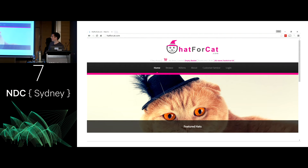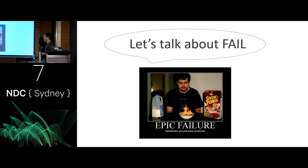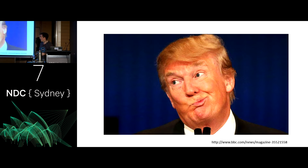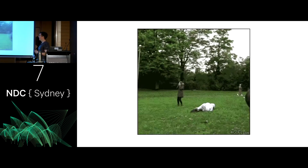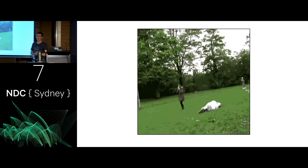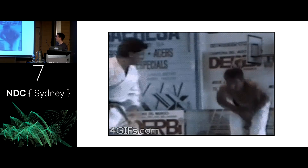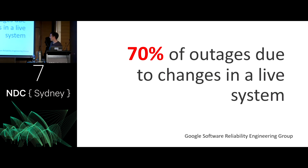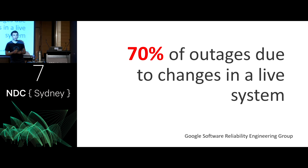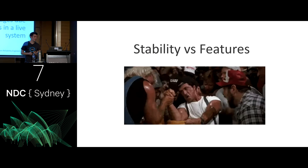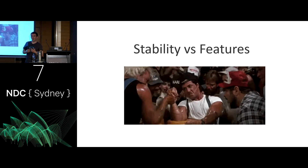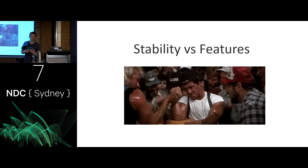What I'd like to do now is talk about fail — not that type of fail. We'll talk about the home-video type of fail, where there's something enjoyable about watching someone else get hurt when it's not us. Google's Software Reliability Engineering group looked at failures in their own systems and found that 70% of outages were due to changes made in a live system. This brings up an interesting point: generally systems are pretty stable until you start making changes. It's a continual arm wrestle between the stability of a system and introducing new features.